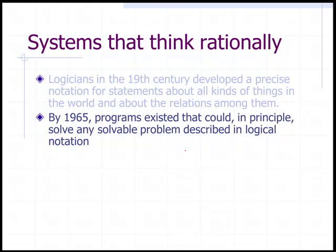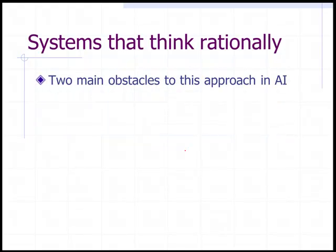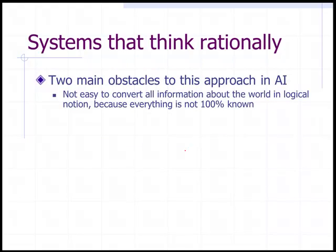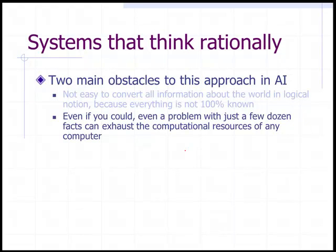By 1965, programs existed that could, in principle, solve any solvable problem described in logical notation. However, there are two obstacles to this approach to AI: it's not easy to convert all information about the world into logical notation because everything is not 100% known. And even if you could, even a problem with just a few dozen facts can exhaust the computational resources of any computer.